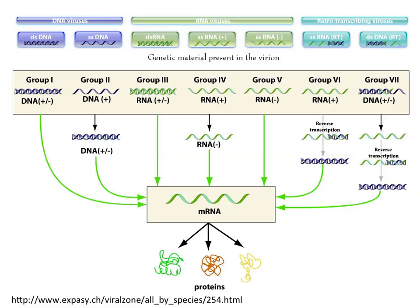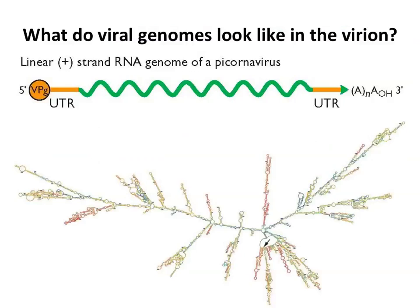Here is another way to organize all this information: a table listing all seven genome types, classified by DNA, RNA, or reverse-transcribing; showing the genome configuration present in the virion; and showing how you get to mRNA. It covers all the different pathways we've discussed — it's very much like the Baltimore scheme but drawn differently. Either representation will serve you well.